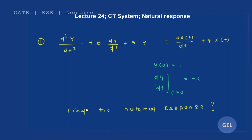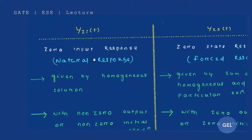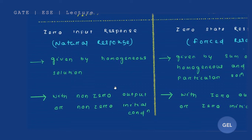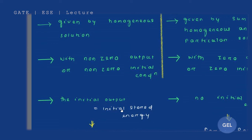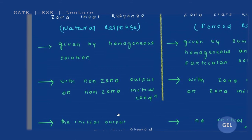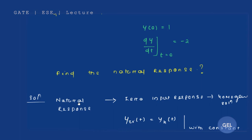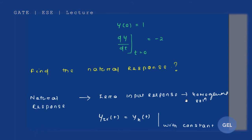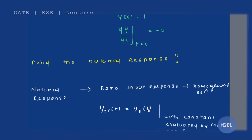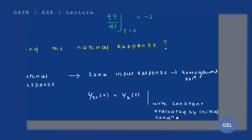We know that the natural response is given by the homogeneous solution, as studied in the previous video lecture. The zero input response or natural response is the homogeneous solution but with non-zero initial conditions. Those non-zero initial conditions represent the initial stored energy responsible for creating the natural response. So y_zi(t) = y_h(t), but with constants evaluated by the initial conditions.